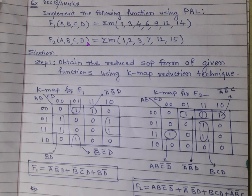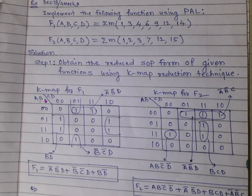One more example for clear understanding — implementing the following functions using PAL. Two functions are given with inputs clearly mentioned as A, B, C, D — meaning this function has four inputs A, B, C, D — and the functions are given as minterm expressions.